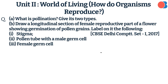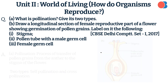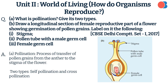What is pollination? Give its two types. Draw a longitudinal section of the female reproductive part of a flower showing germination of pollen grains. Label on it the following: Stigma, Pollen tube with a male germ cell, and Female germ cell.